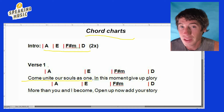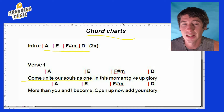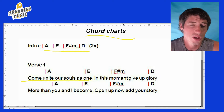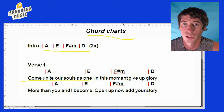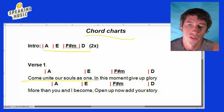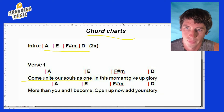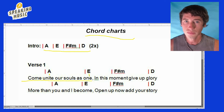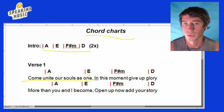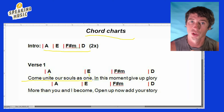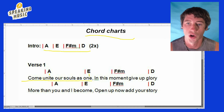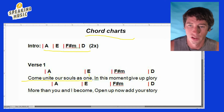Sometimes you'll have something designating how many measures there are, but usually not. It'll usually just be the chords placed over the words where you change the chord.